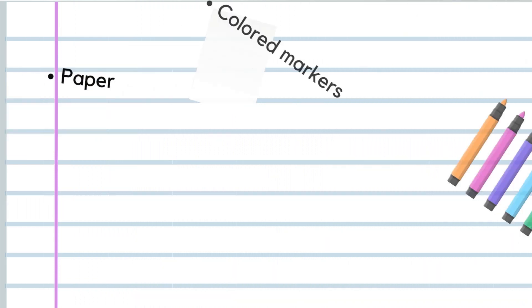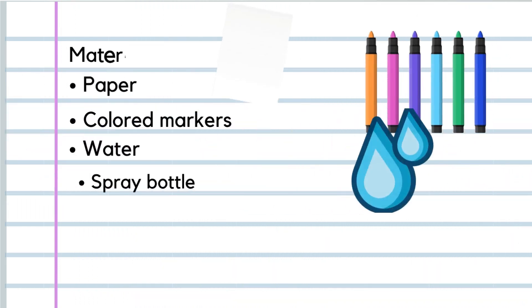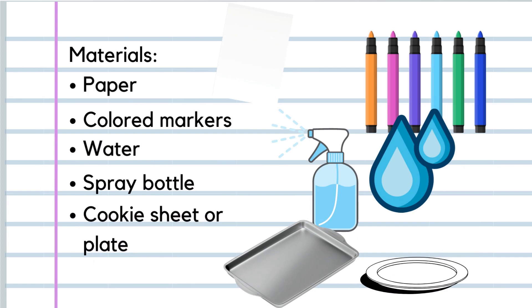Let's create a much smaller model to understand this better. These are the materials you will need: a blank piece of paper, any color marker of your choice, water, a spray bottle, and lastly, a cooking sheet or a plate.